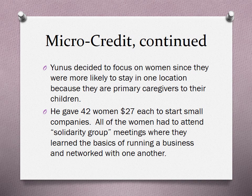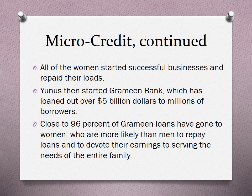He gave 42 women $27 each — in today's money, about $150 each — to start a small company. All of the women had to attend solidarity group meetings, almost like a support group, where they learned the basics of running a business and networked with one another. All of the women started successful businesses and repaid their loans, so clearly the experiment was a big success.